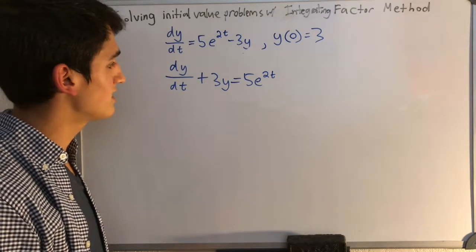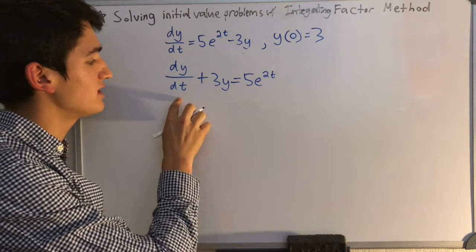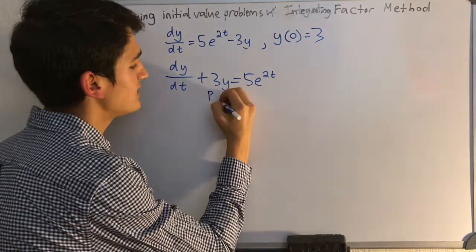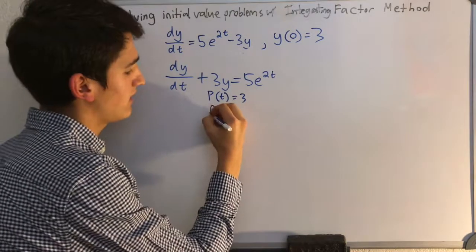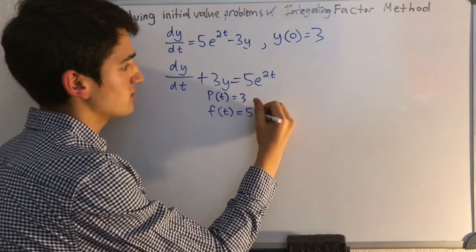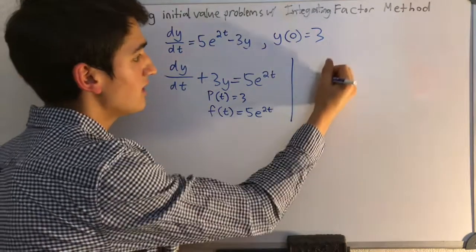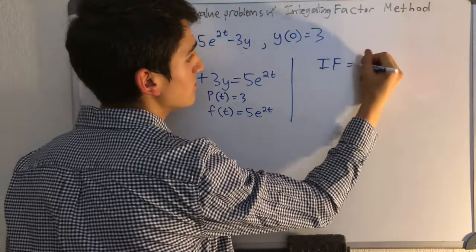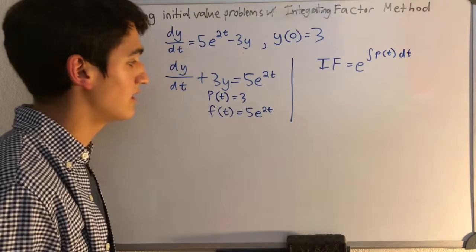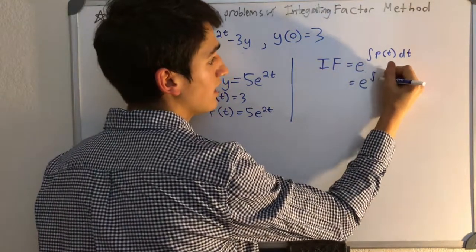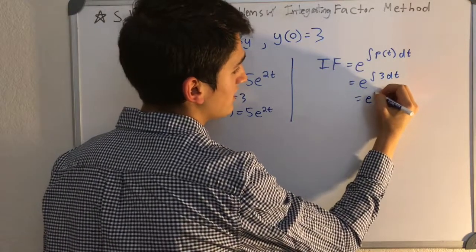We're done with step 1. We've got our equation in the correct form. So our p of t equals 3, because it's the coefficient of the y, and our f of t equals 5e to the 2t. Next, we're going to find our integrating factor. We know that the integrating factor equals e to the integral of p of t dt. So we know that p of t is 3, so we plug that in and we have e to the integral of 3 dt, which integrating is simply e to the 3t. Don't worry about adding a plus c onto that with the integrating factor.